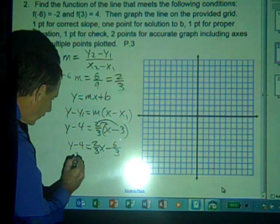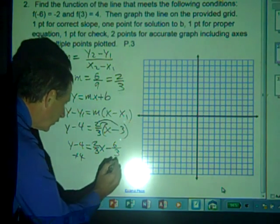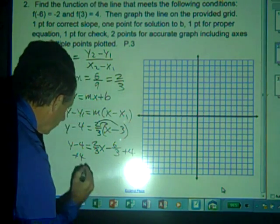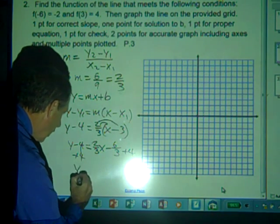Next, to solve for y, if we add 4 to both sides of the equation, we cancel here and get y equals